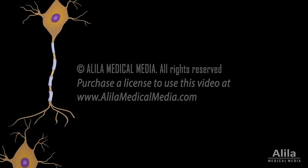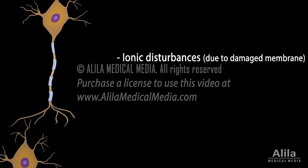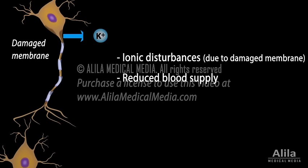The events that take place during and after concussion are complex and not fully understood, but likely involve ionic imbalances and energy crisis due to reduced blood flow. Ionic disturbances such as abnormal potassium efflux and calcium influx interfere with action potential dynamics, disrupting normal communication between neurons. Reduced blood supply impairs cellular functions and makes the brain more vulnerable to further damage.